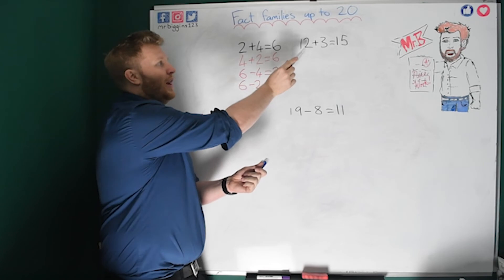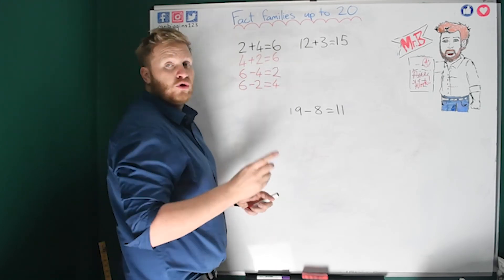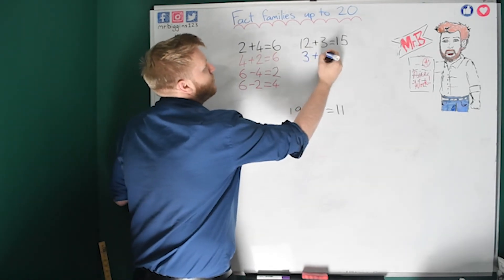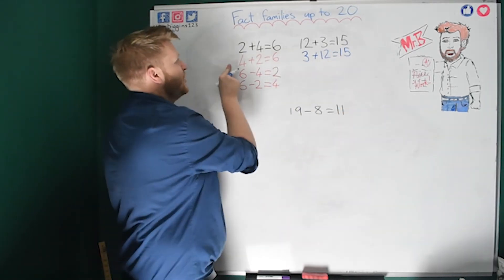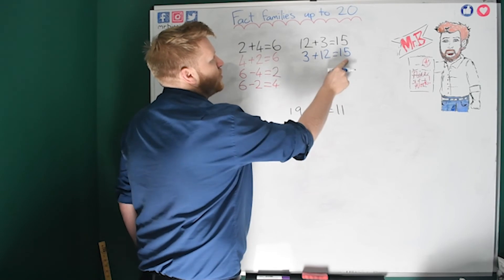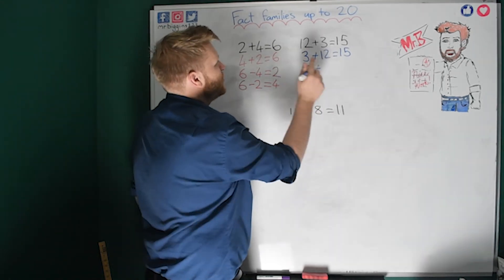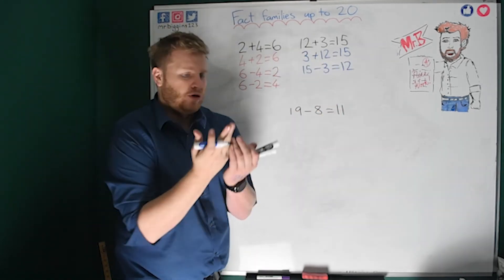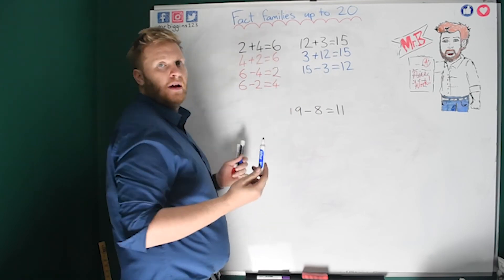Watch how quickly I can do this with even bigger numbers. I've got the sum 12 plus 3 equals 15. First, I can swap the additions around: 3 plus 12 equals 15. Now I need 2 take-aways. The biggest number always goes first in subtraction, and that's always going to be my total — 15. I'll take away 3 first, so the answer is 12. I didn't have to draw dots or count on my fingers.